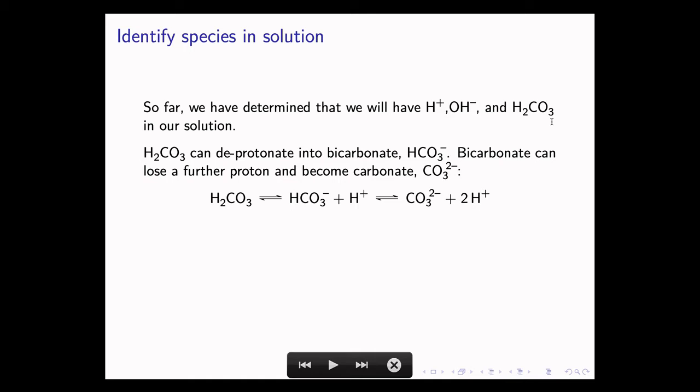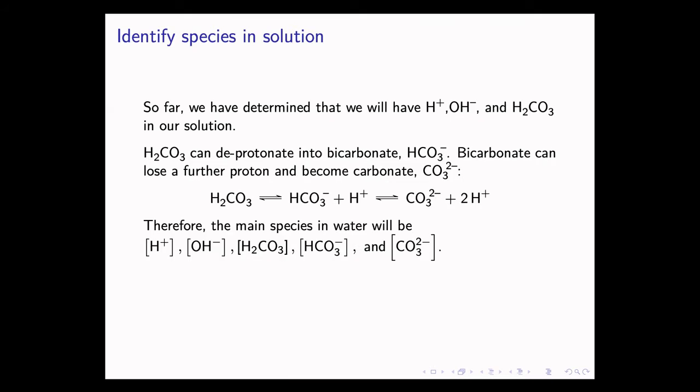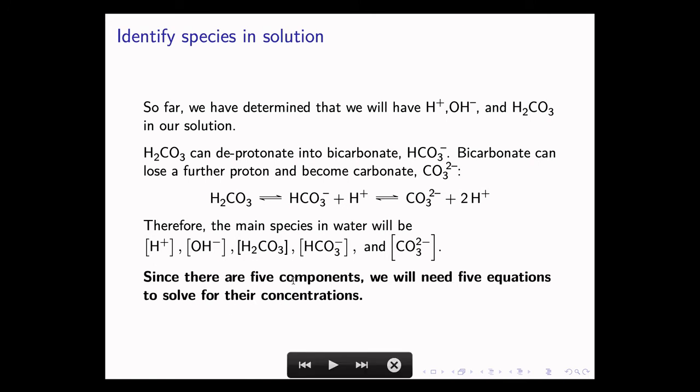However, the story is a little bit more complicated. Carbonic acid, H2CO3, can deprotonate into bicarbonate, HCO3-. Bicarbonate can also lose a further proton, a proton is just an H+ ion, and become carbonate, CO3 2-. The first deprotonation reaction has H2CO3 as a reactant and it yields HCO3- and H+ as products. And the bicarbonate ion can also lose a second H+ and become CO3 2-. So we know that the main species in this solution will be H+, OH-, H2CO3, HCO3-, and CO3 2-. Since there are five of these components, we are going to need five equations to solve for their concentrations.